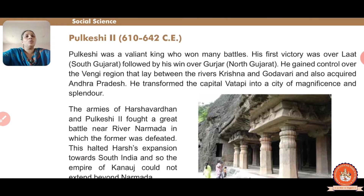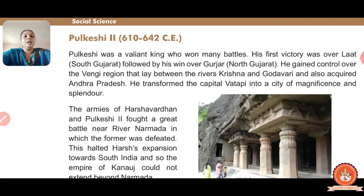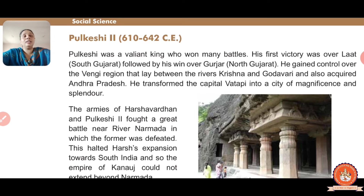His first victory was over south Gujarat, followed by north Gujarat. He gained control over the Vengi region that lay between the rivers Krishna and Godavari, and also acquired Andhra Pradesh. He transformed the capital Vatapi into a city of magnificence and splendor - Vatapi is now situated in Karnataka - and everyone knew about this special monarchy situated there.